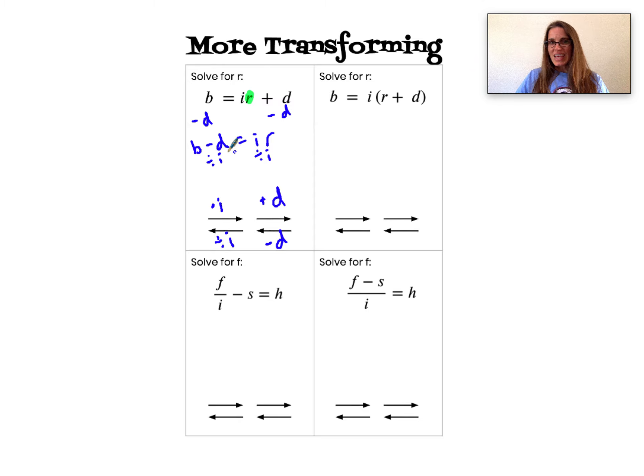Now to write this out, I'm not going to keep it as b minus d divided by i. I'm going to write b minus d in my numerator and i in my denominator. So this is my solution: r equals b minus d divided by i. I can't subtract d from b, I can't divide further. So this is it, I'm done.